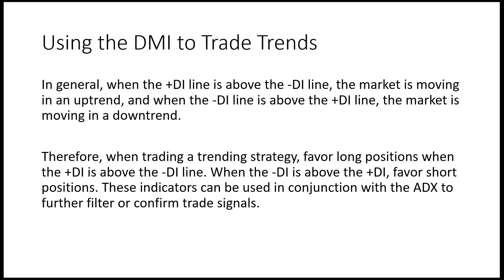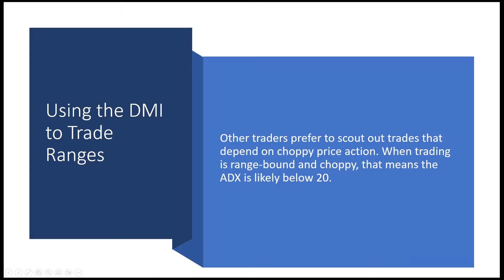In general, when the DI plus line is above the DI minus line, the market is moving in an uptrend, and the opposite for downtrends. When trading a trend strategy, favor long positions when the DI plus is above the DI minus. Other traders prefer to scout out trades that depend on choppy price action — when trading is rangebound and choppy, ADX is likely below 20.